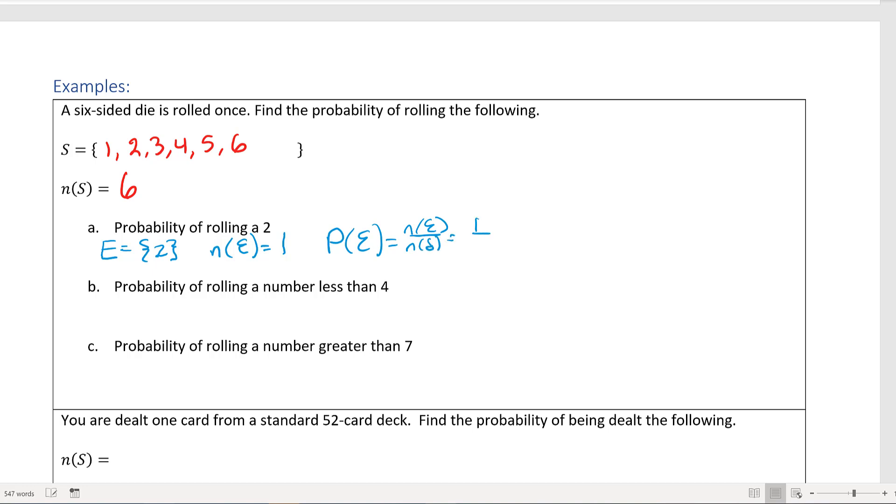...which is going to be 1 out of 6. A more simple way of writing that might just be - so this is my answer, but a more simple way of writing it could be P(rolling a 2), so you could just say P(2). There's only one way of getting that out of 6. That's also another way of writing it without having to write all of that stuff about E.